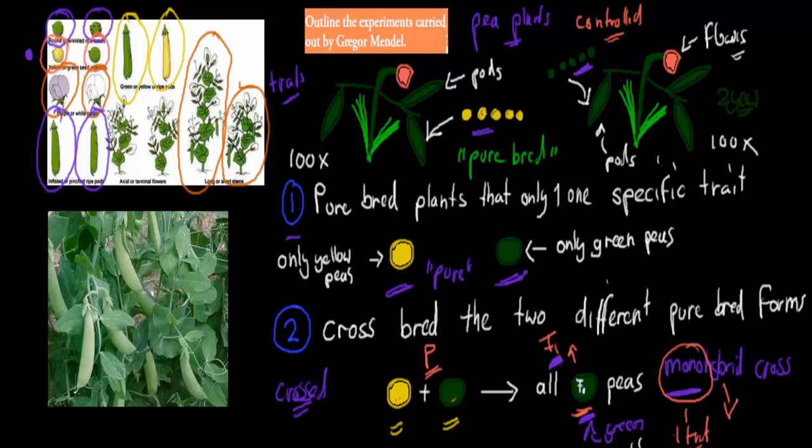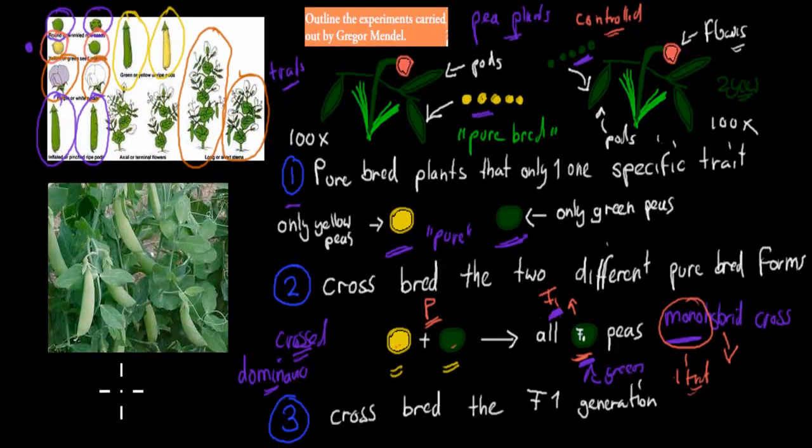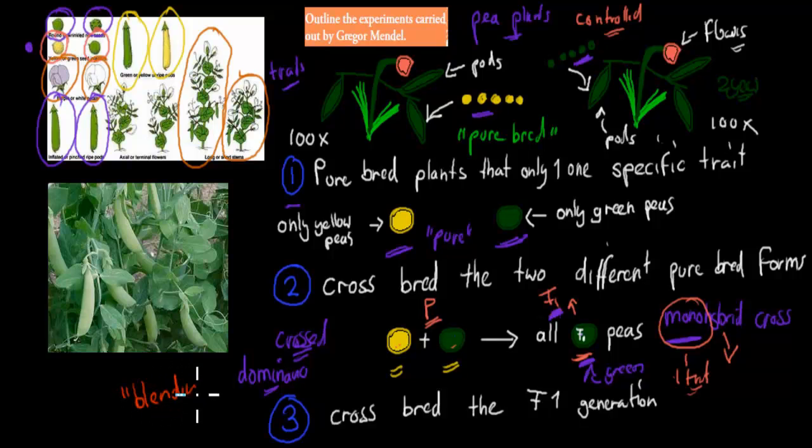And that kind of hints at some type of dominance. So a dominance behavior, in this case, green over yellow. And remember, what was the prevailing idea at the time? It was a blending idea. So blending would mean that if you cross these two together, the color would have been somewhere in between, like a lighter green, between green and yellow. But this didn't happen. What actually happened was it was pure green, like the actual parent here, which suggests this one has a trait which was somehow dominant over this one. This one would have been somehow recessive. And those were terms he used as well to describe the behavior.